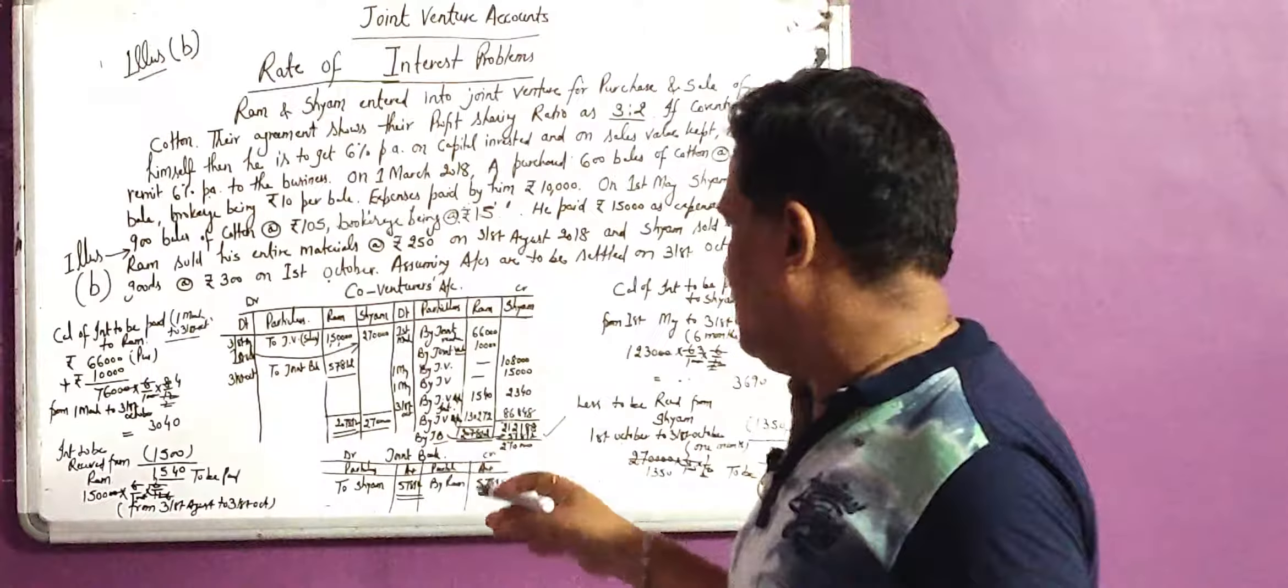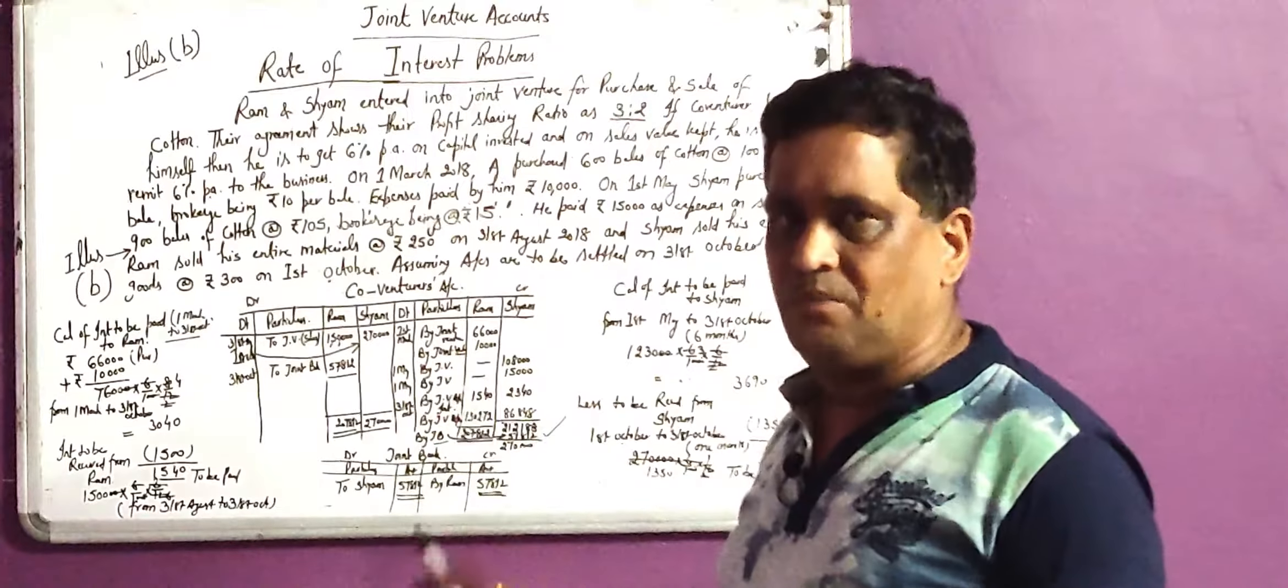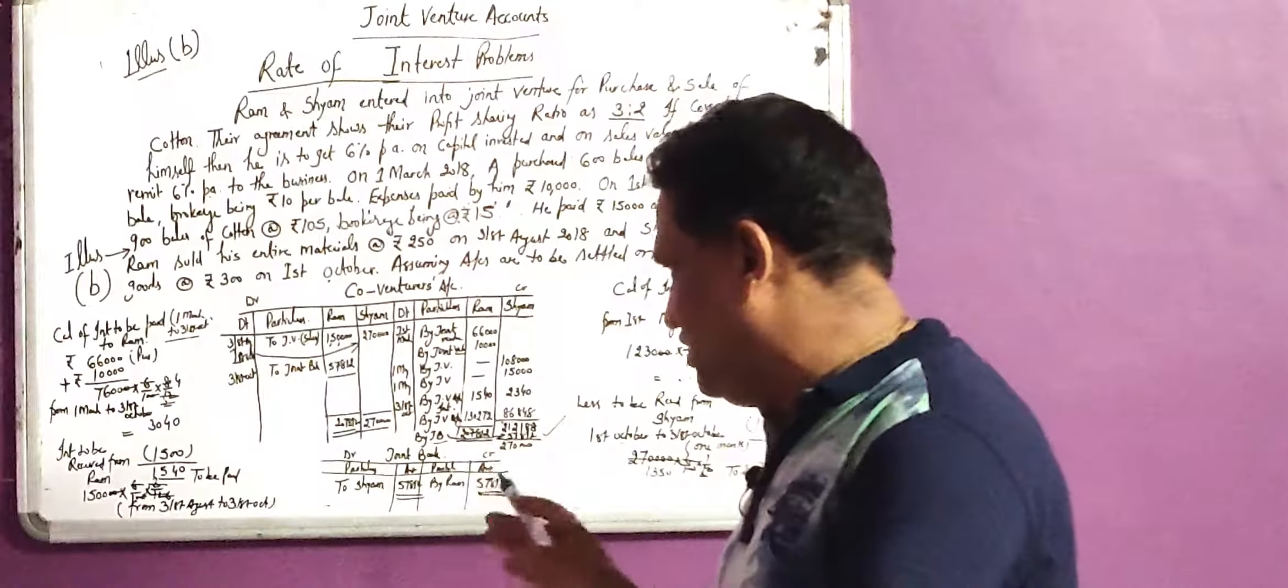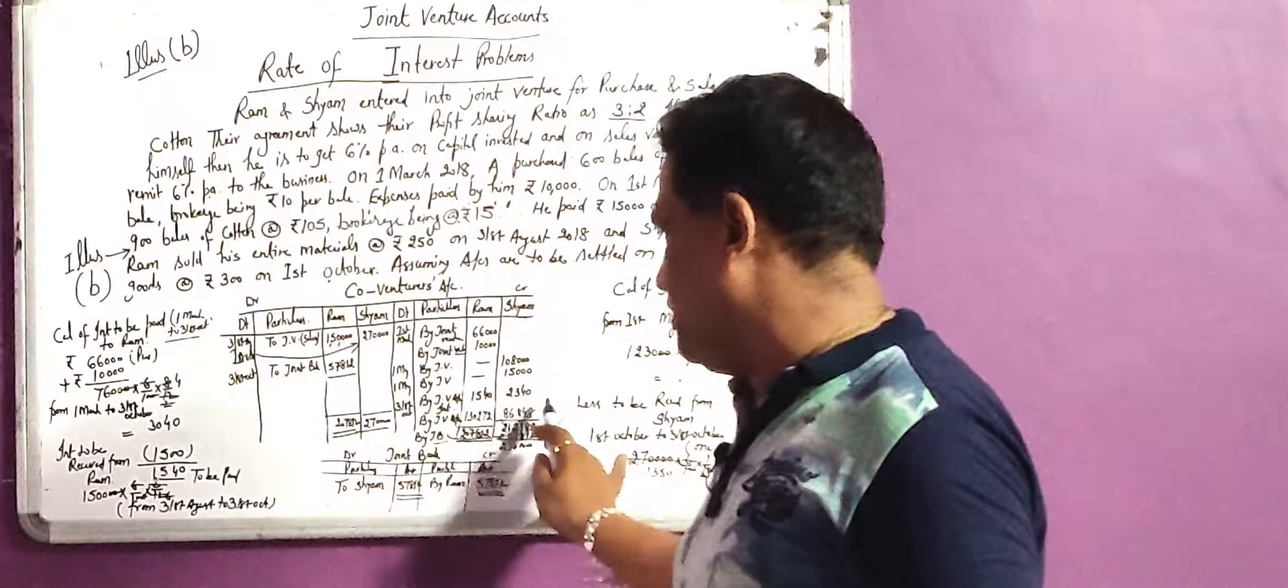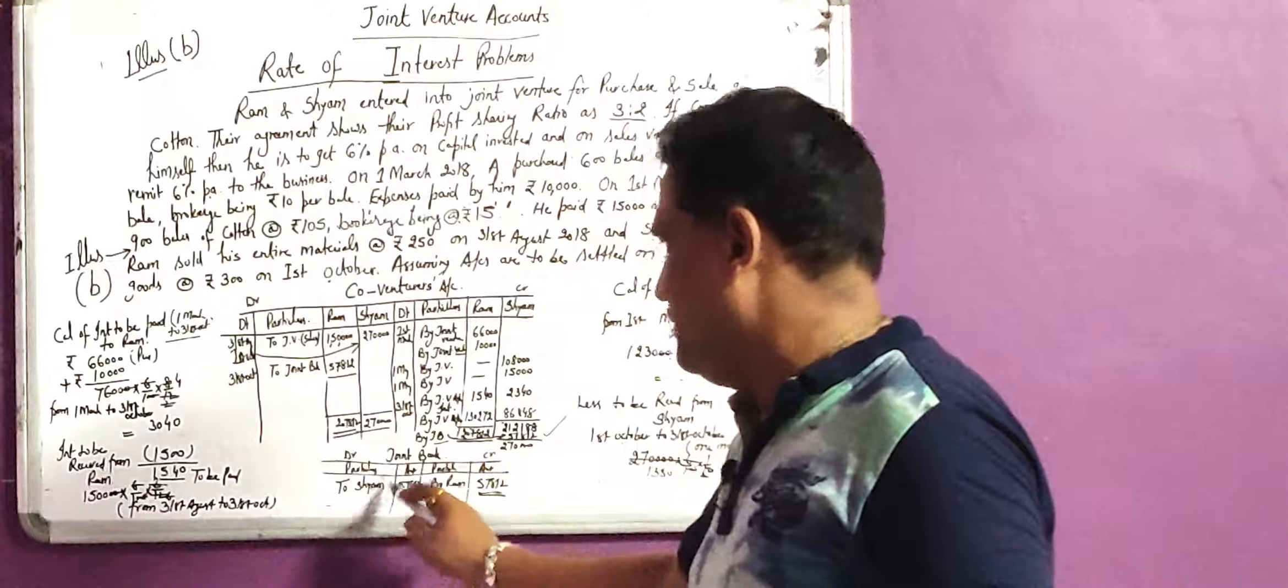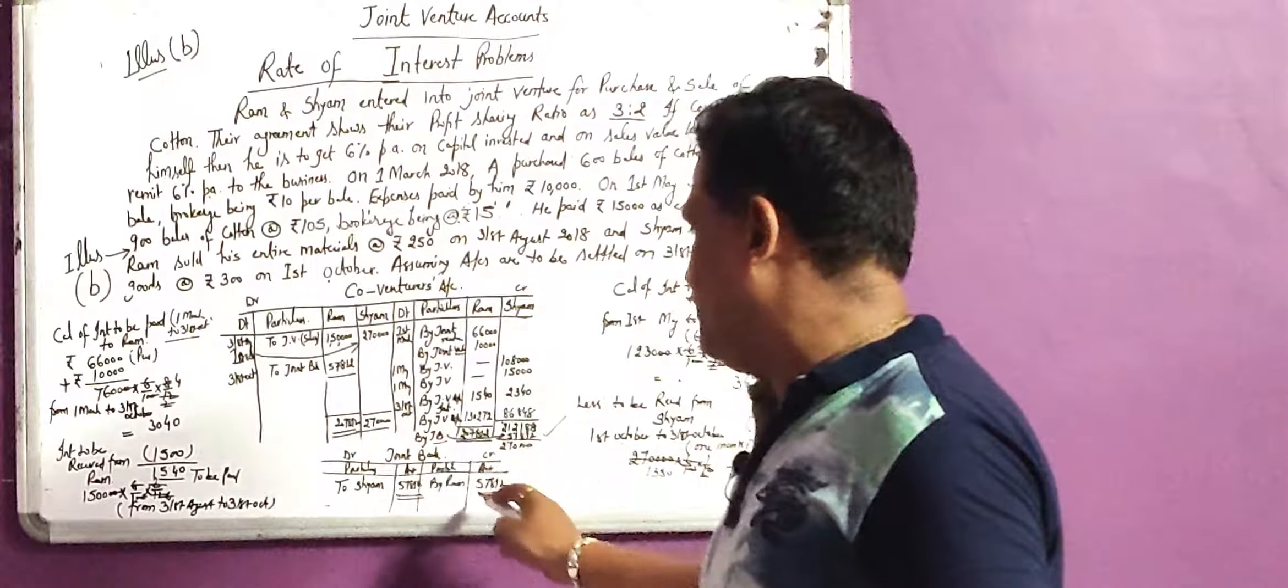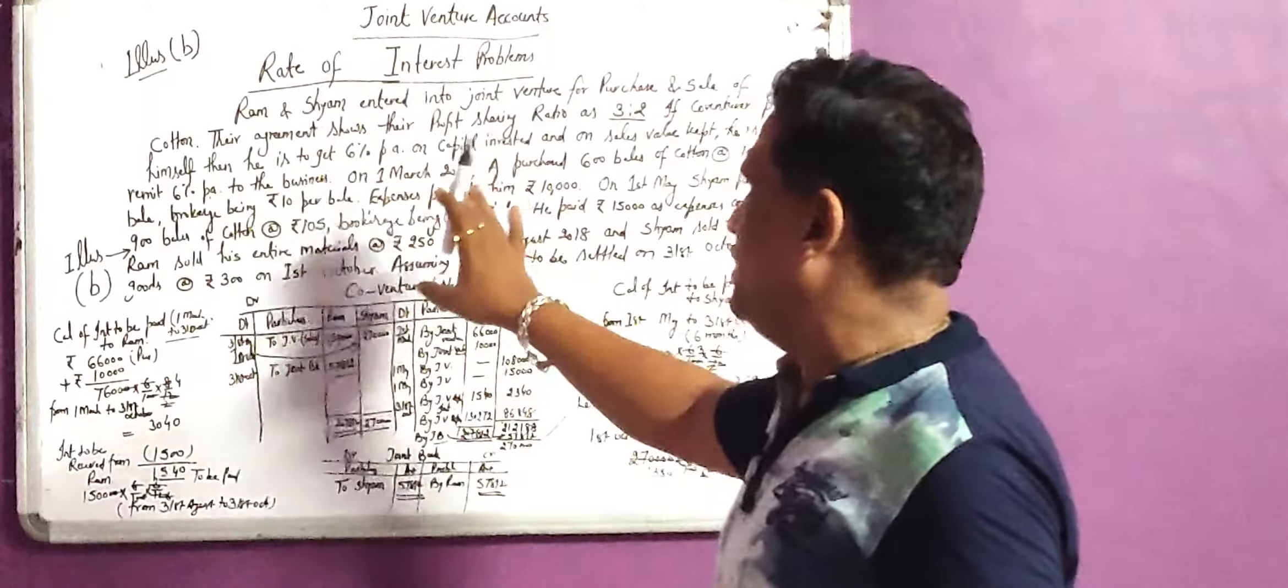So it means now here we have to do, if we make joint bank after this, only one transaction is there of the joint bank, that is a final transaction. Only one transaction came, one co-venturer, we have to take same money and one co-venturer, we have to give same money, and this amount is 57,812. Now if we make joint bank account, then we received from Sham, so entry will be joint bank will come to Sham. Joint bank will be debited, that amount shall be 57,812 and on the credit side by Ram, that will be 57,812.